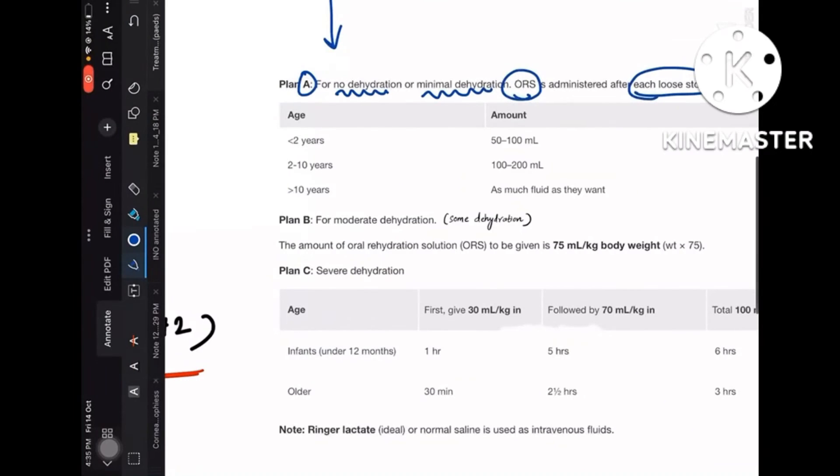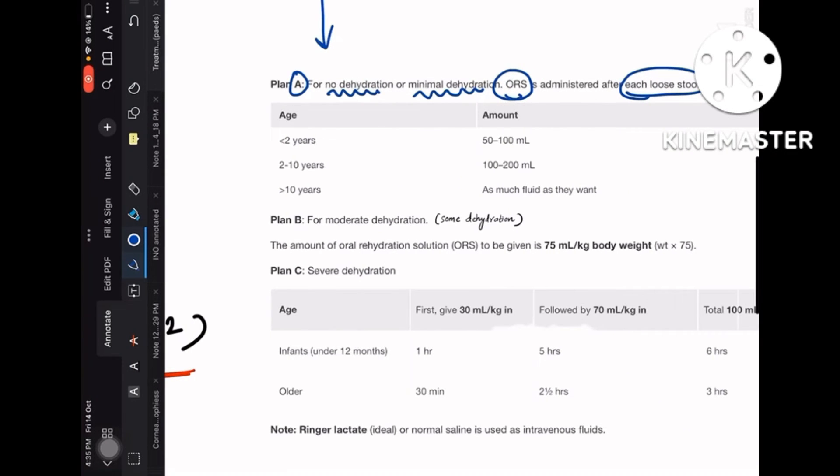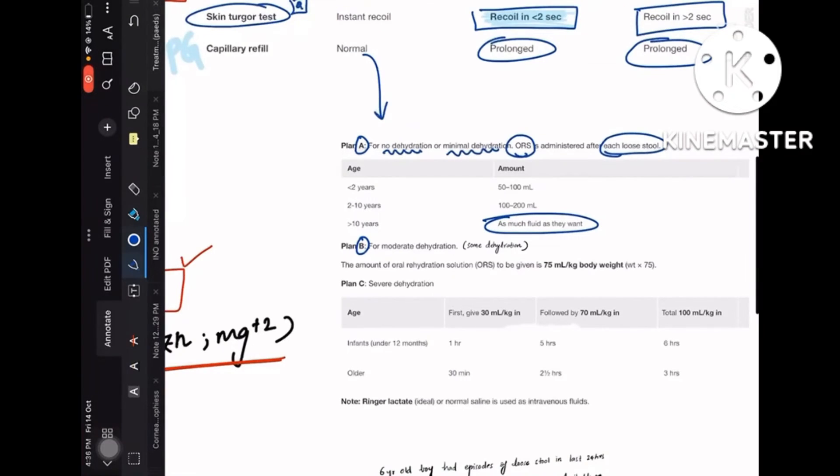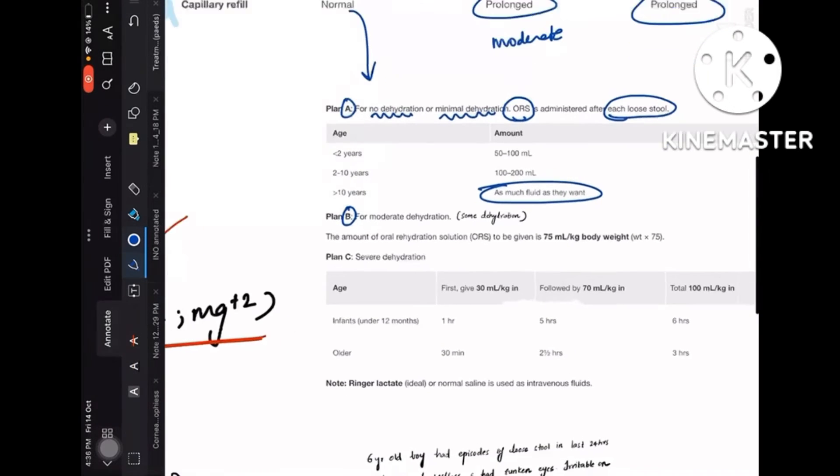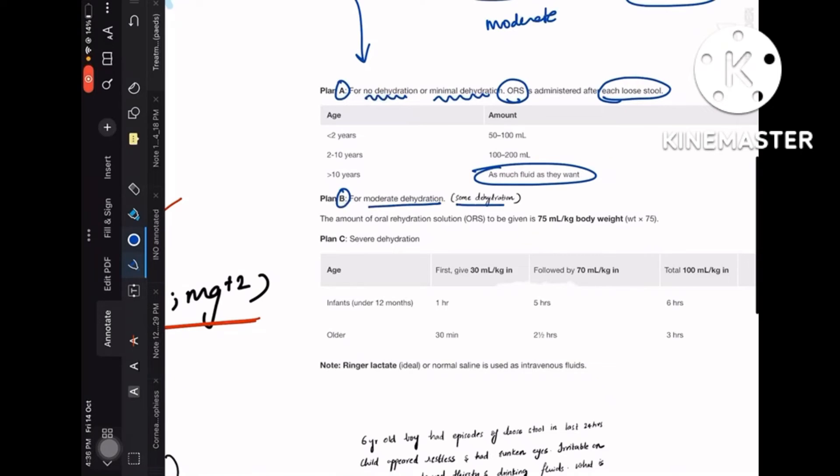You just administer the ORS after each stool passage. For less than 2 years kids, it is 50 to 100 ml. 2 to 10 years, it is 100 to 200 ml. And greater than 10 years, it is as much fluid as they want. Coming to Plan B, it is for the second column—that is moderate column. Plan B is for moderate dehydration or some dehydration. Here you have to give 75 ml per kg body weight.